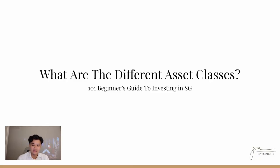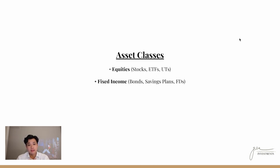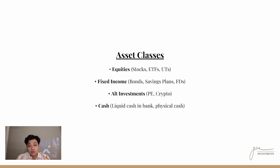Next, what are the different asset classes? First, you have equities, which are essentially things like stocks, ETFs (exchange traded funds), and UTs (unit trusts). You have fixed income instruments like bonds, savings plans, endowment plans, and fixed deposits — commonly known as fixed Ds or FDs. Next, you also have alternative investments — things like private equities, VCs (venture capitalists), growth equity, LBOs, and crypto. And finally you have cash — liquid cash in the bank, physical cash, or cash equivalents.